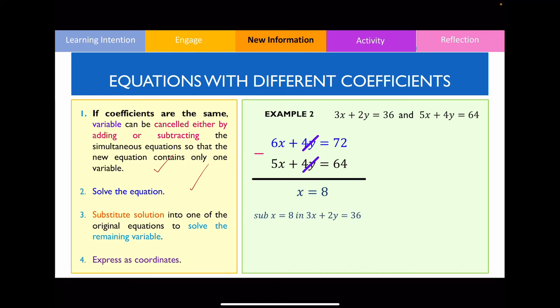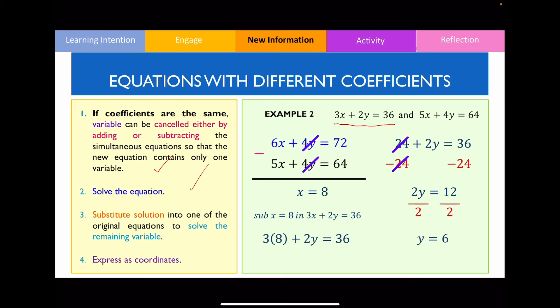I'm going to substitute x = 8 back into the first equation. So replacing x with 8: 3 times 8 equals 24. To solve for y, I subtract 24 from both sides: 36 minus 24 equals 12. Then divide both sides by 2 to get y by itself — 12 divided by 2 equals 6. Finally, expressing the answer as a coordinate — x first, then y — our point of intersection is (8, 6).